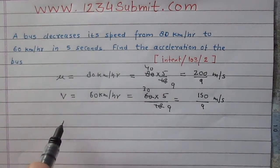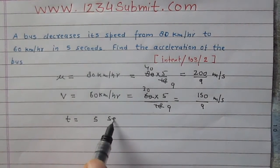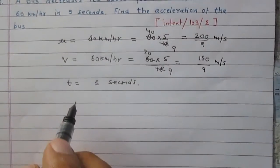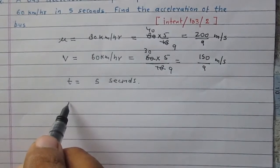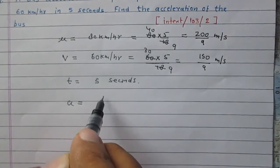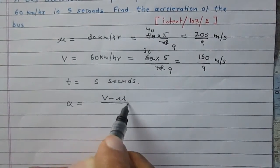Time taken to change the velocity from U to V is 5 seconds. By Newton's first equation of motion, we can say acceleration A produced in the bus is its final velocity V minus initial velocity U upon time.